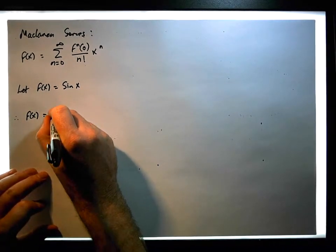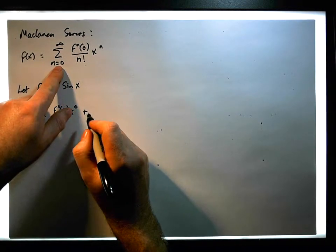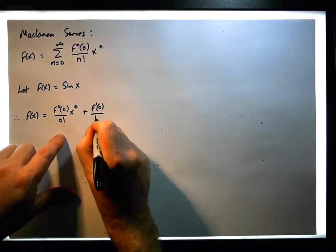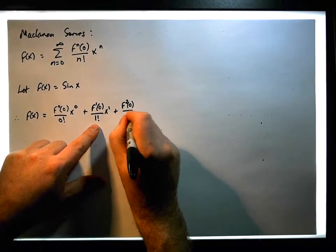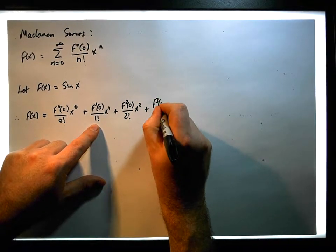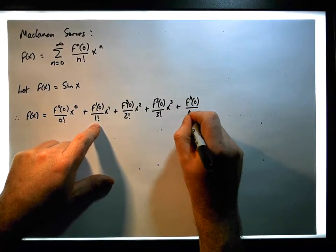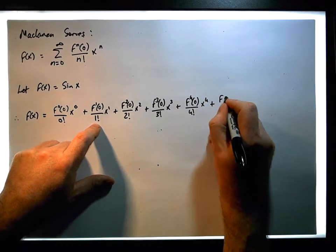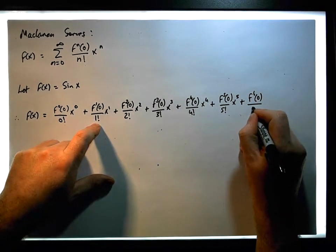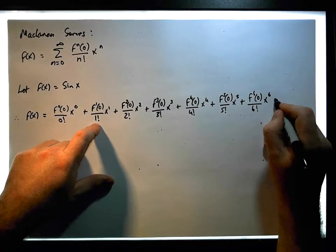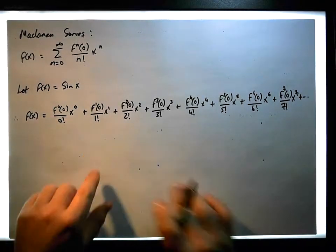When n equals 0: f⁽⁰⁾(0) over 0! times x⁰, plus when n equals 1: f⁽¹⁾(0) over 1! times x, plus f⁽²⁾(0) over 2! times x², plus f⁽³⁾(0) over 3! times x³, plus f⁽⁴⁾(0) over 4! times x⁴, plus f⁽⁵⁾(0) over 5! times x⁵, plus f⁽⁶⁾(0) over 6! times x⁶, plus f⁽⁷⁾(0) over 7! times x⁷, plus dot dot dot — this goes on forever.